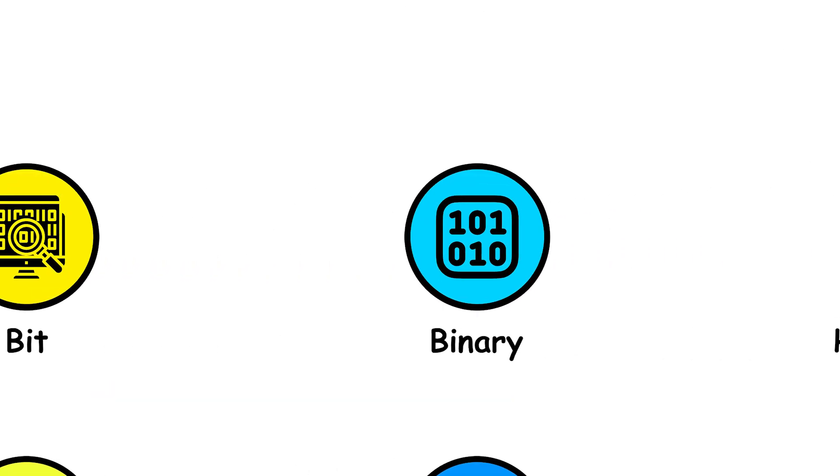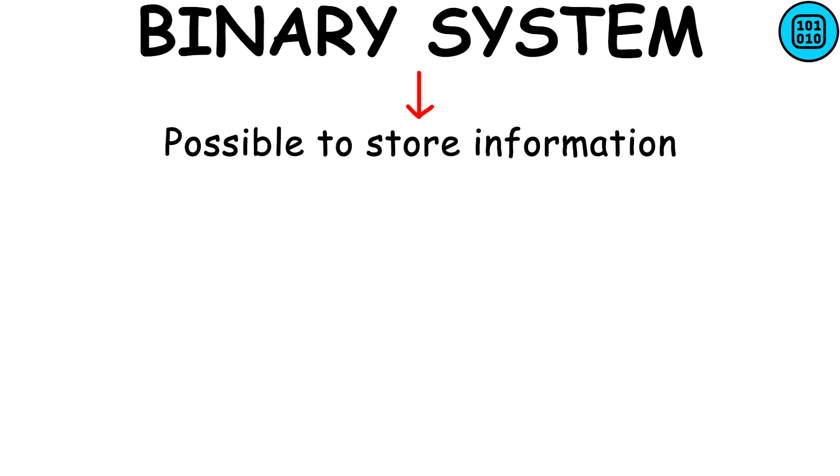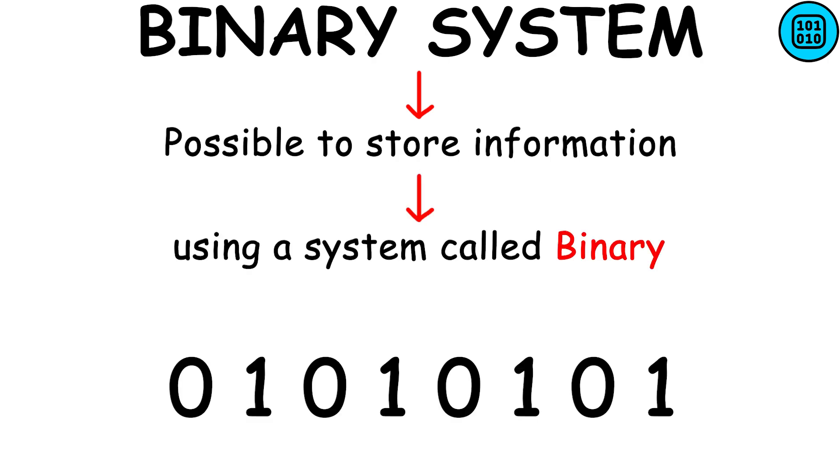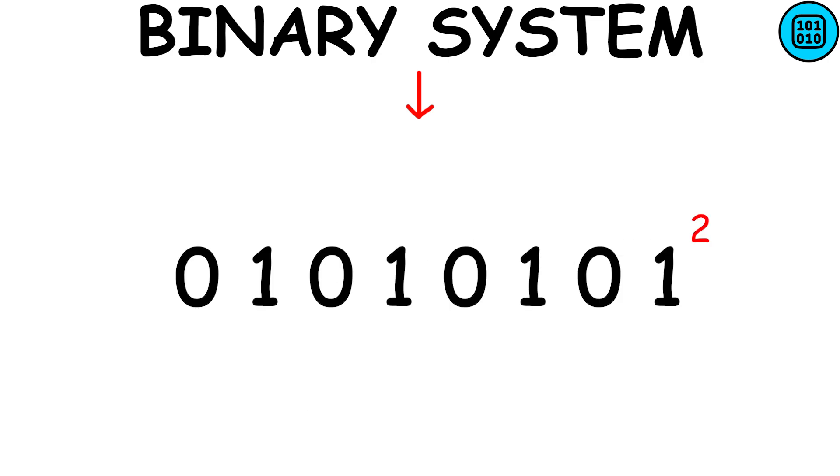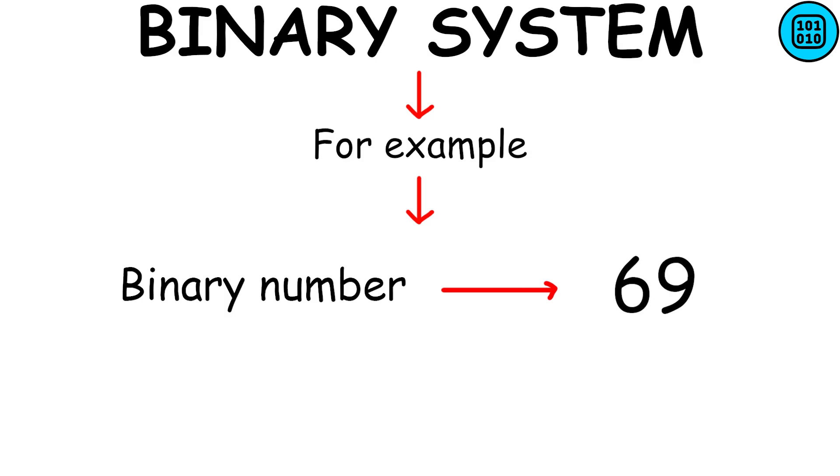Thanks to the combination of bits and bytes, it is possible to store information using a system called binary. Each bit represents a power of two, with one indicating that the power is included and zero indicating that it is not. For example, a binary number can represent the number 69 through the sum of the powers of two.